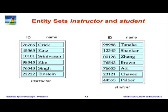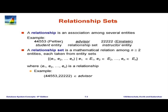Here is a sample of entity sets for instructor and students showing a few attributes. Moving on, we have a notion of relationships and relationship sets. A relationship is an association among several entities. For example, students have advisors — an advisor is a relationship between a student and an instructor. A relationship set is a set of relationships of the same type. The advisor relationship set contains many instances of student-instructor pairs where the instructor is an advisor of the student.